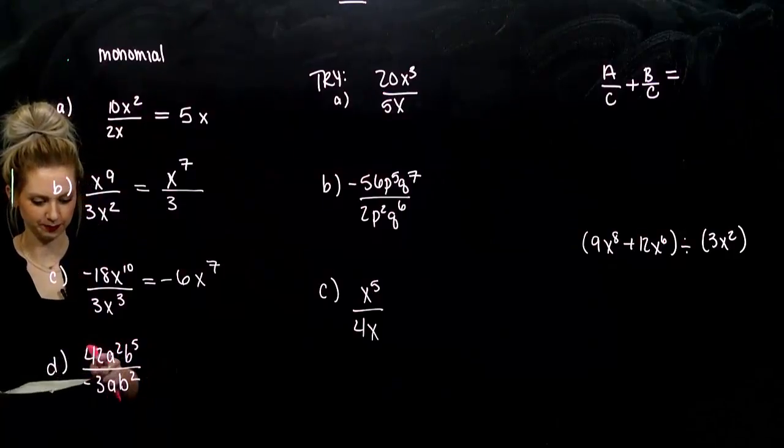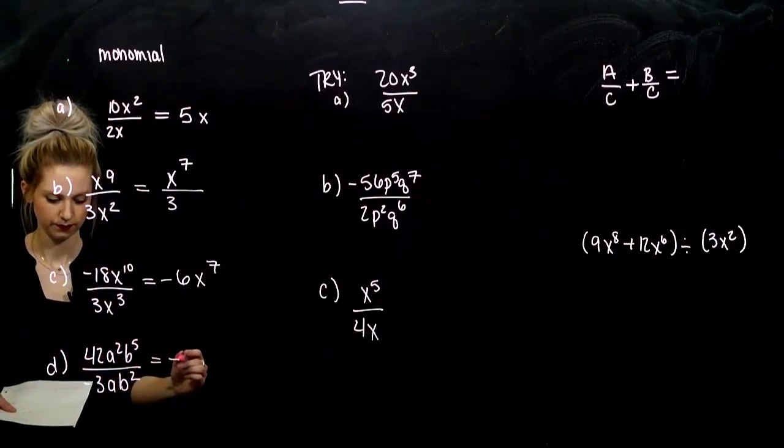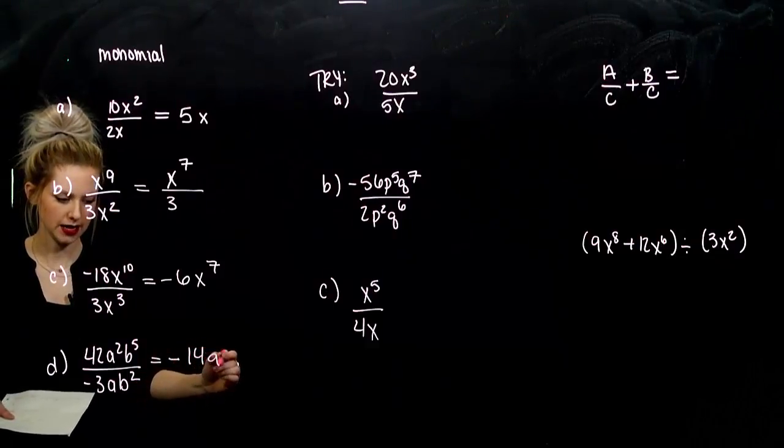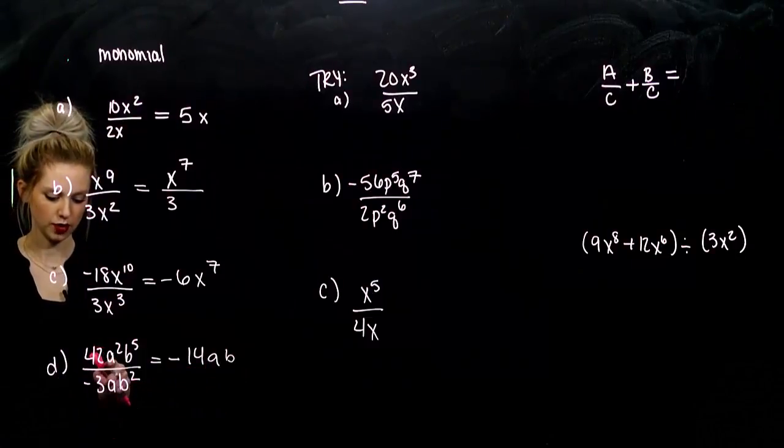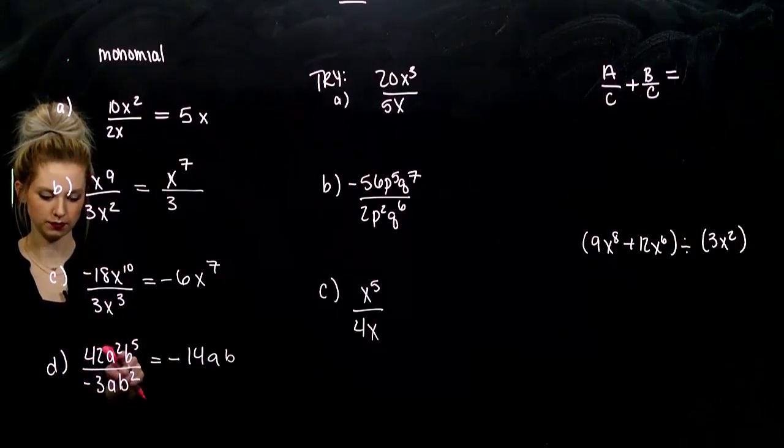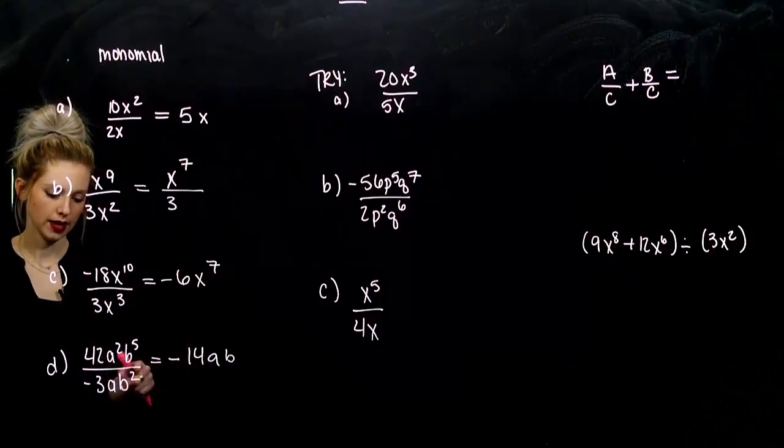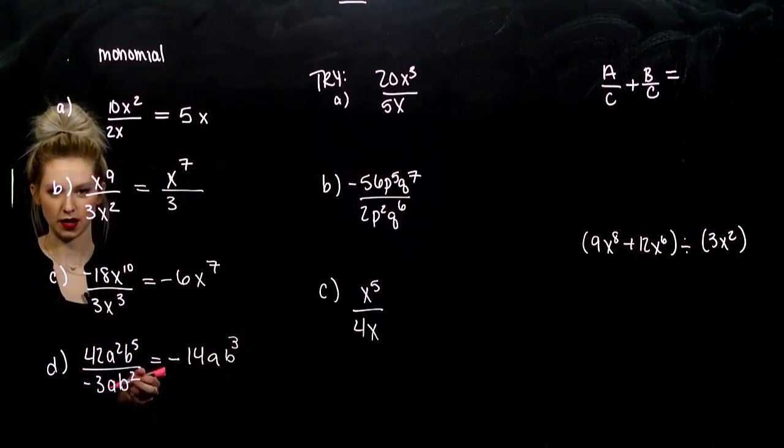And part d, 42 divided by negative 3 is negative 14. And we can look at the a's and the b's individually and see how many we have left. So, same base and division, 2 minus 1. I've got 1a. And how many b's? 5 minus 2. 3 altogether.